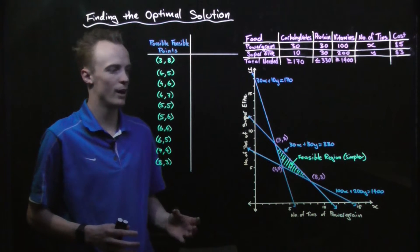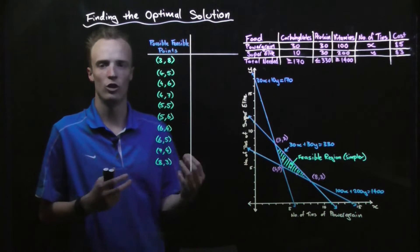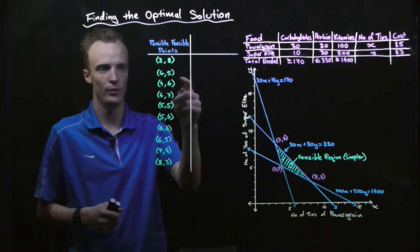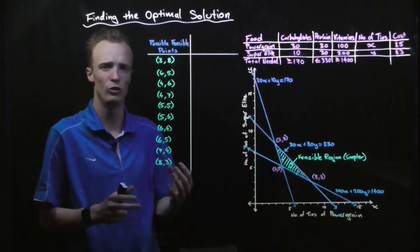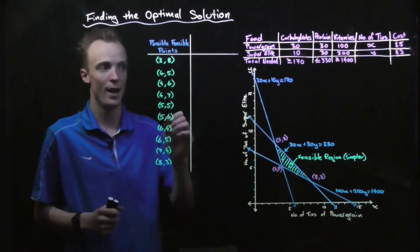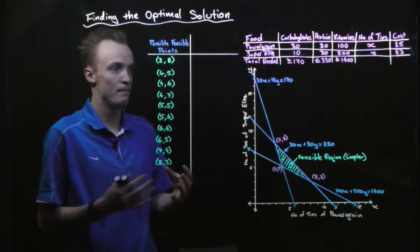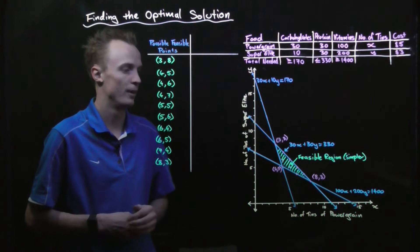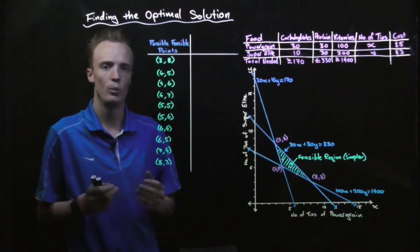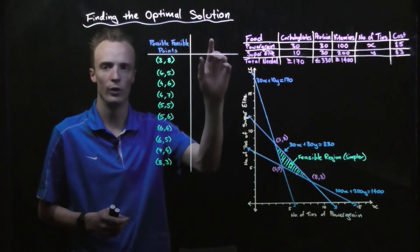In our previous video we graphed the feasible region that showed us we had a total of 10 feasible solutions or combinations of power grain and super elite that met the dietary requirements of our athlete. What we're going to do today is what's known as finding the optimal solution.